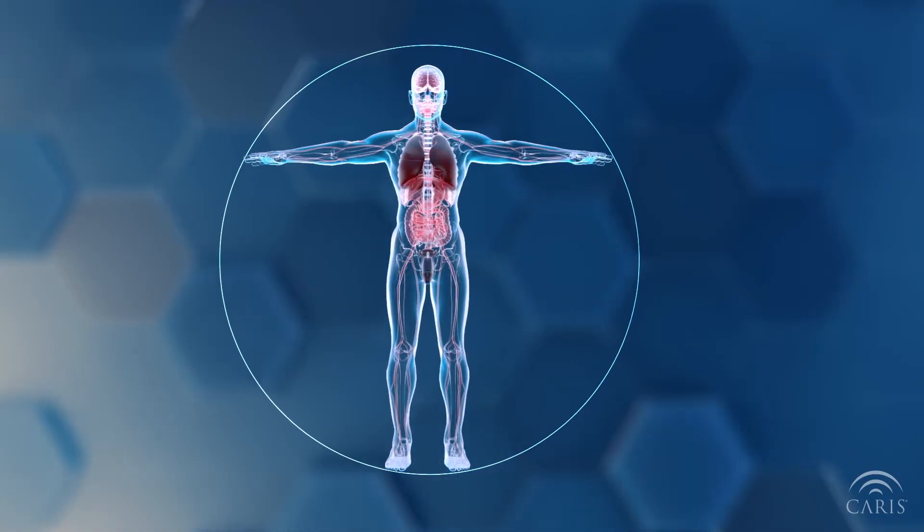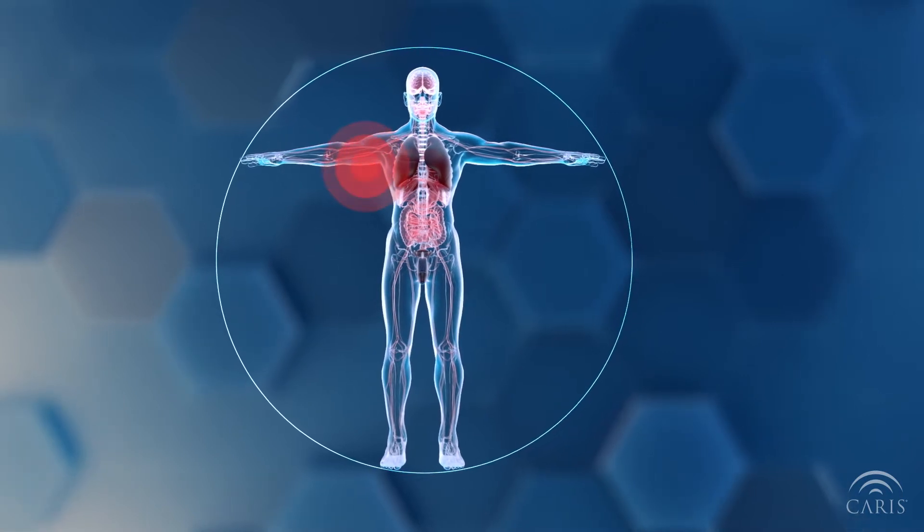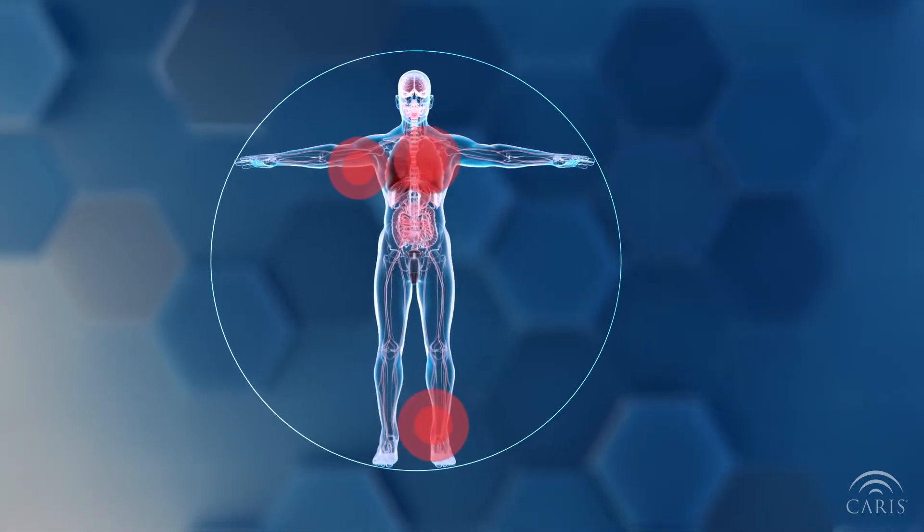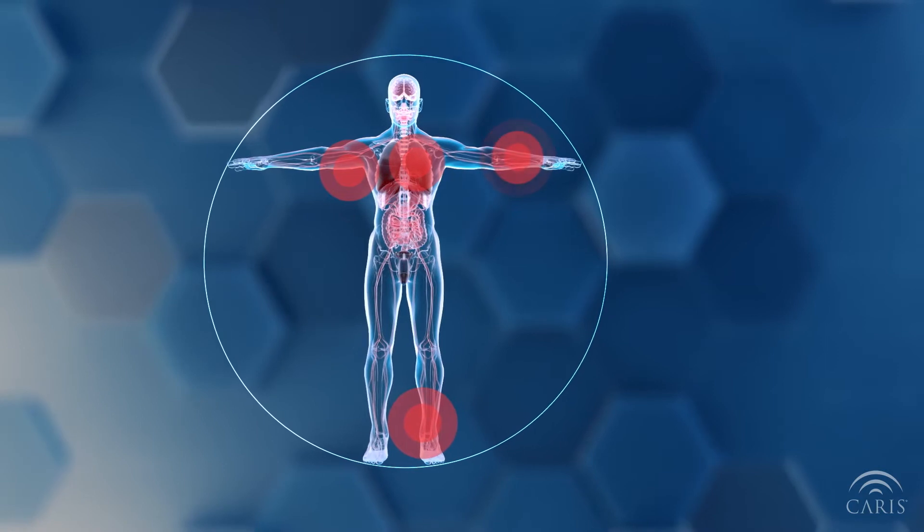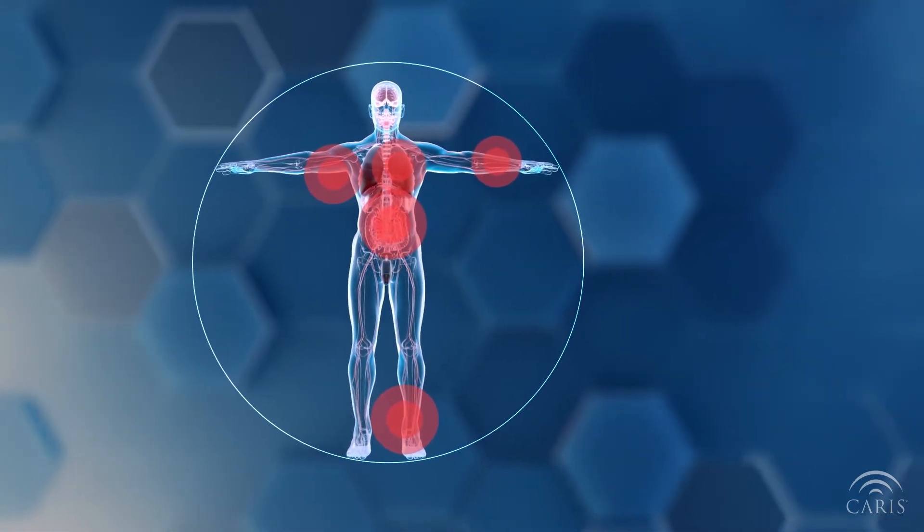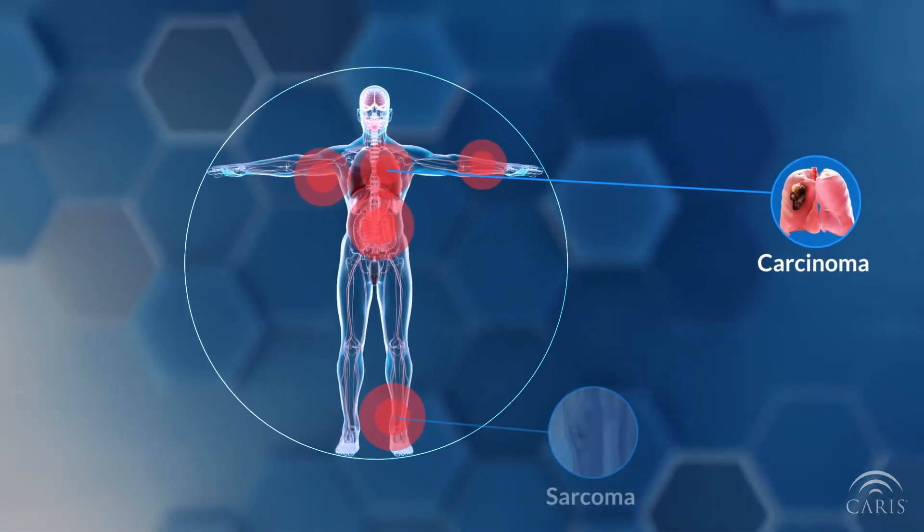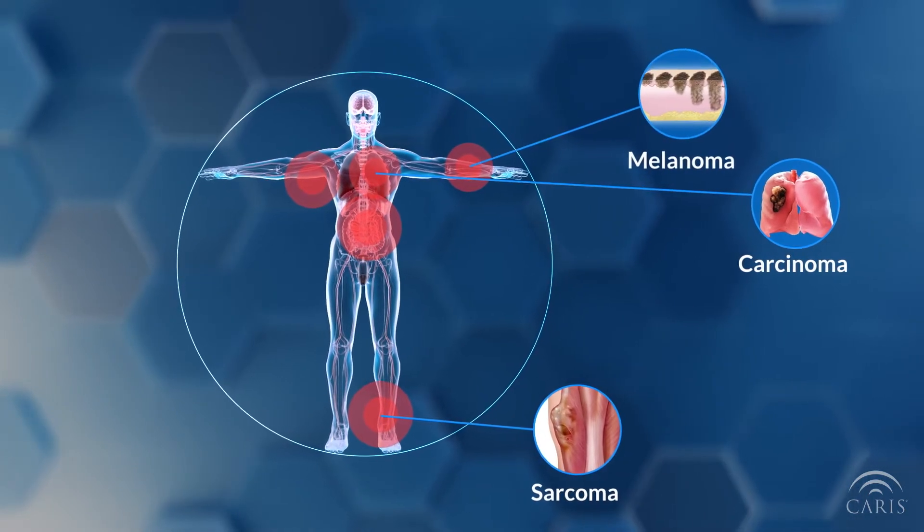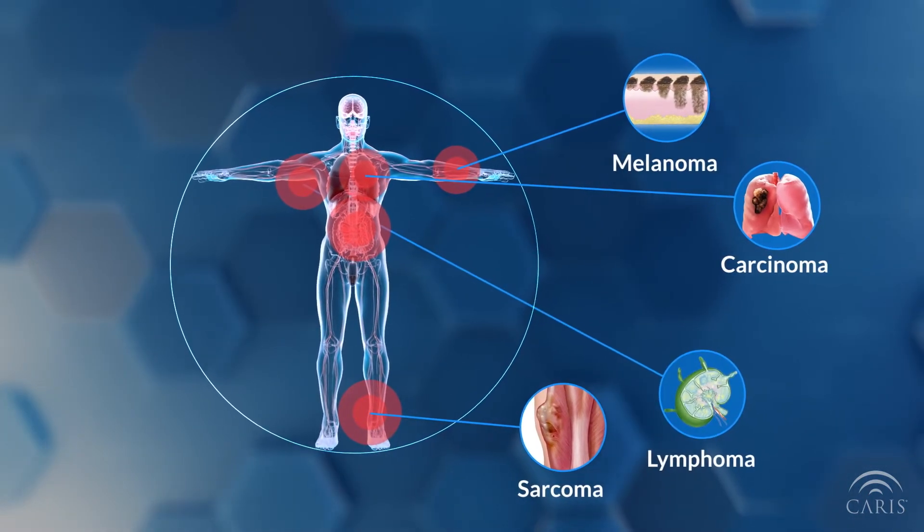For diagnosis or classification purposes, cancer is organized into different types based on what tissue is involved. The five main types of cancer are carcinoma, sarcoma, melanoma, lymphoma, and leukemia.